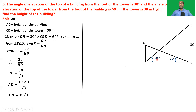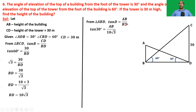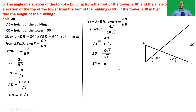From triangle ABD: tan D = AB/BD, so tan 30 = AB/BD. We know BD = 10√3, so 1/√3 = AB/10√3. Therefore AB = 10√3/√3 = 10. The height of the building is 10 meters.